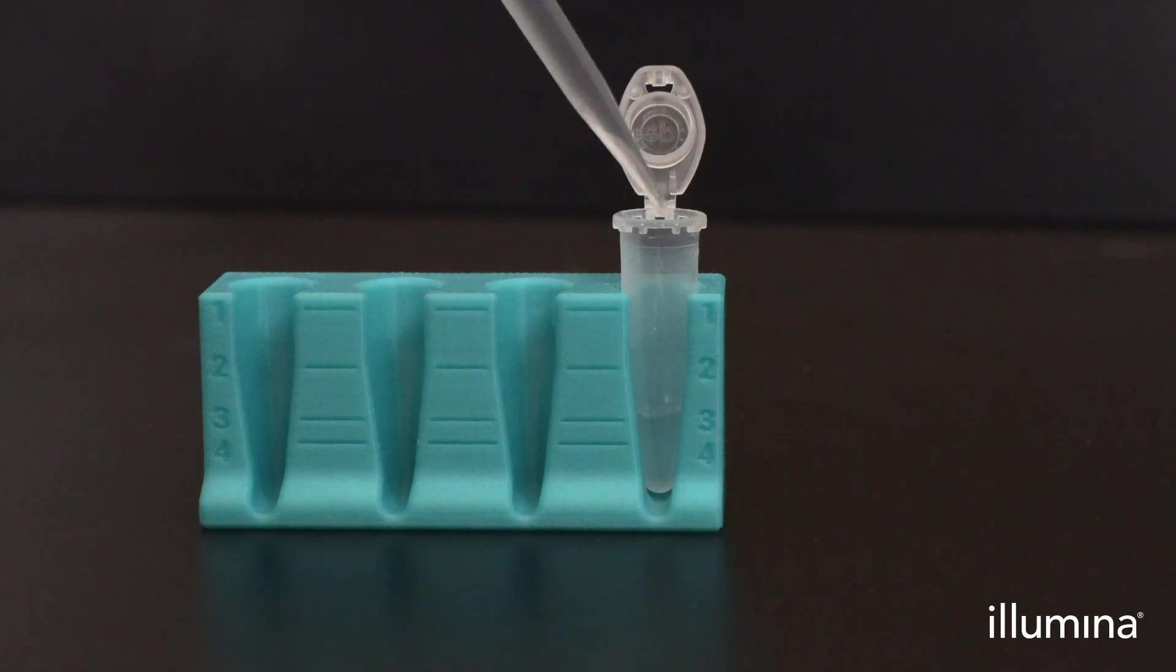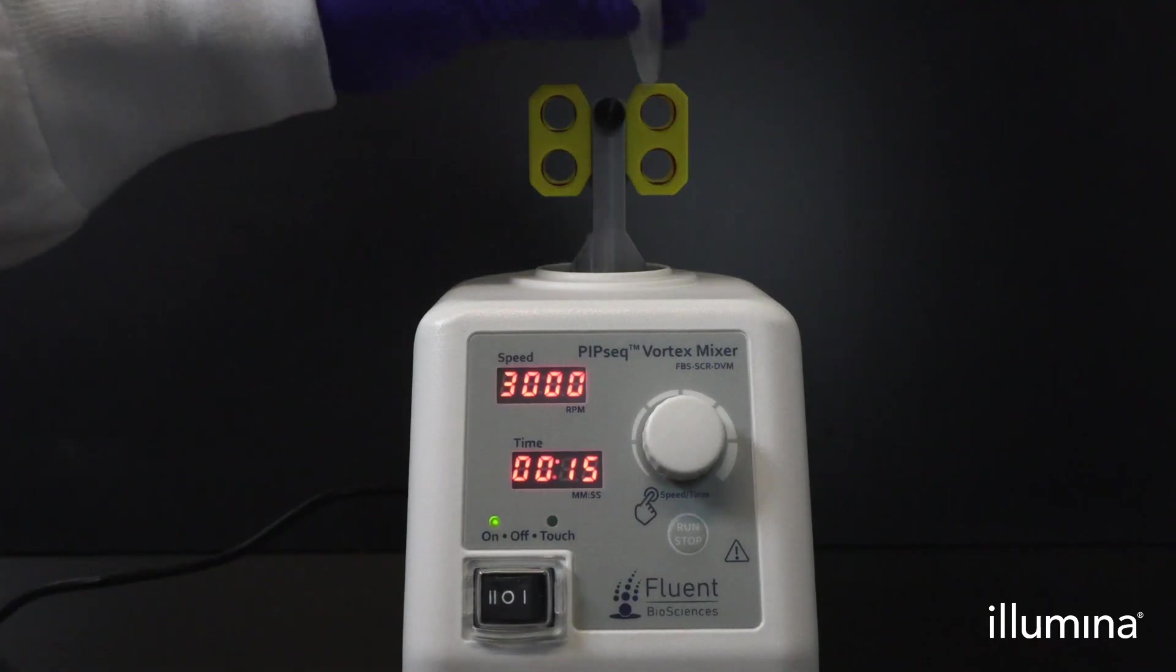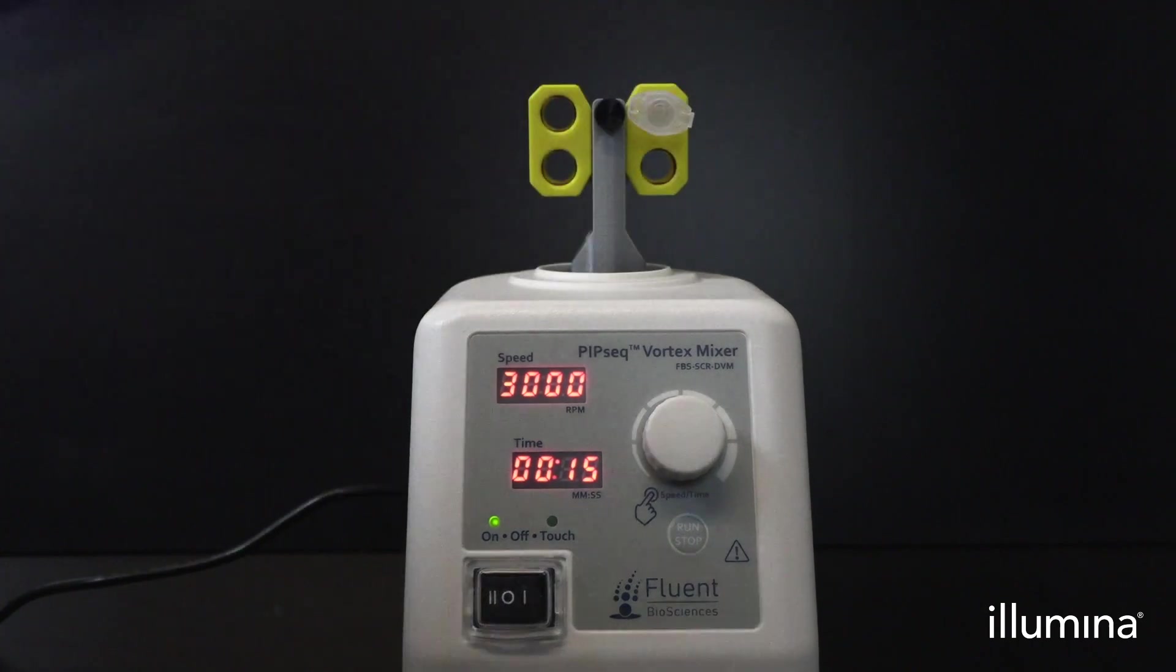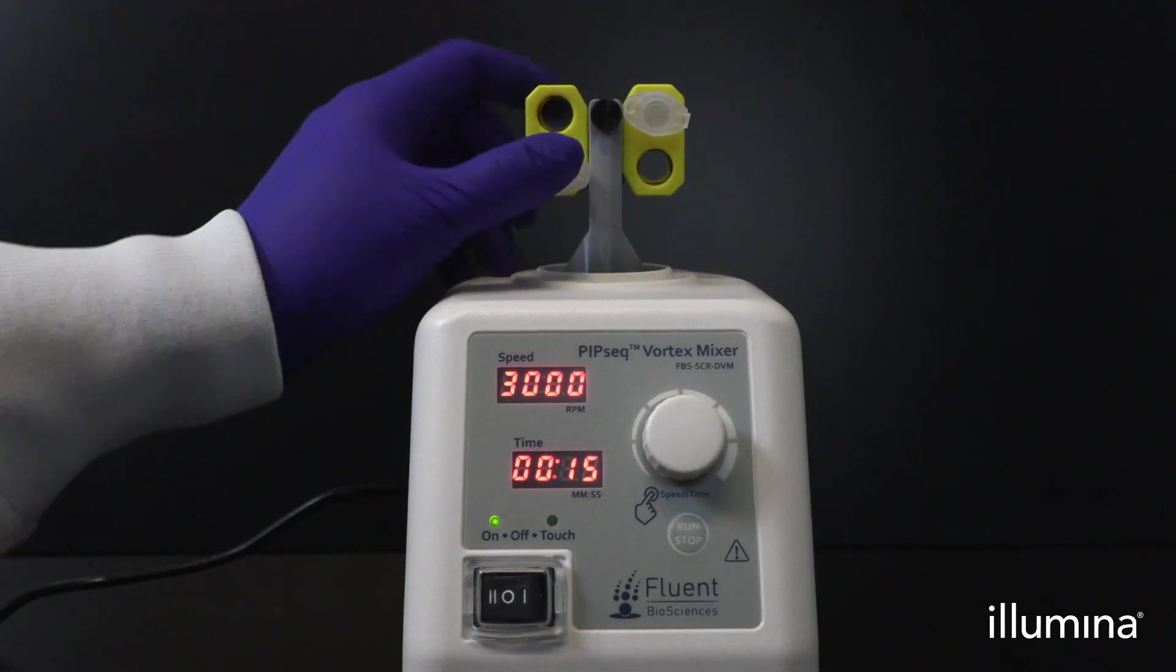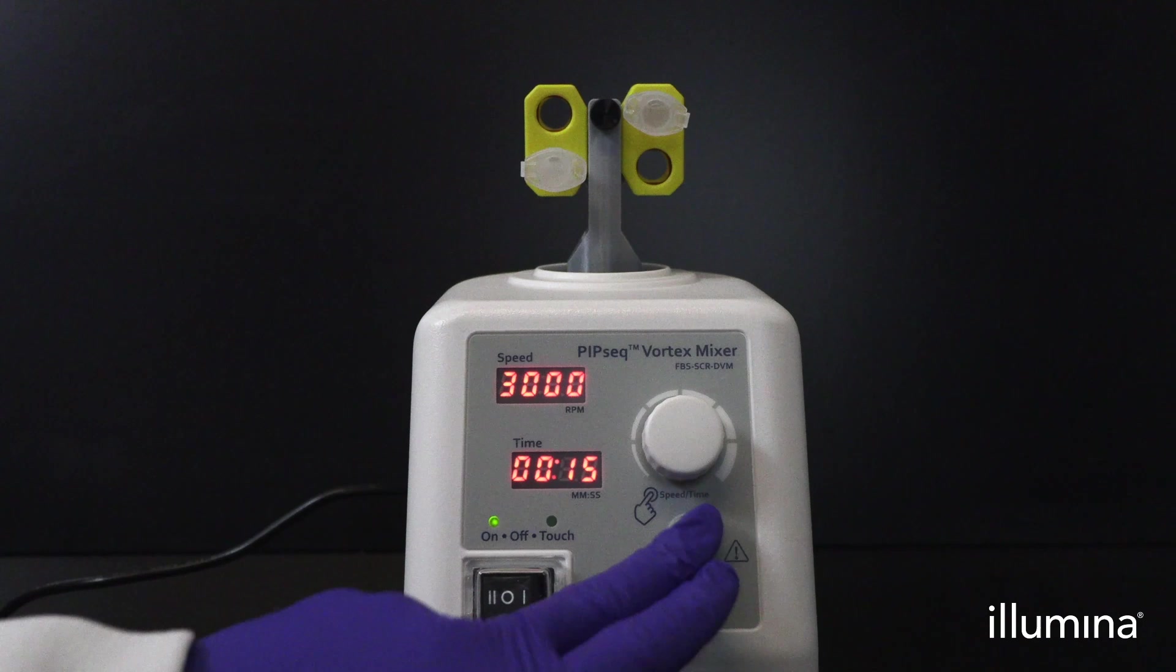Next, add 1000 microliters of partitioning reagent down the sidewall of the pip tube. Tightly cap tubes and place in the rotating vortex adapter in the horizontal configuration. Ensure the tubes are fully inserted into the adapter.